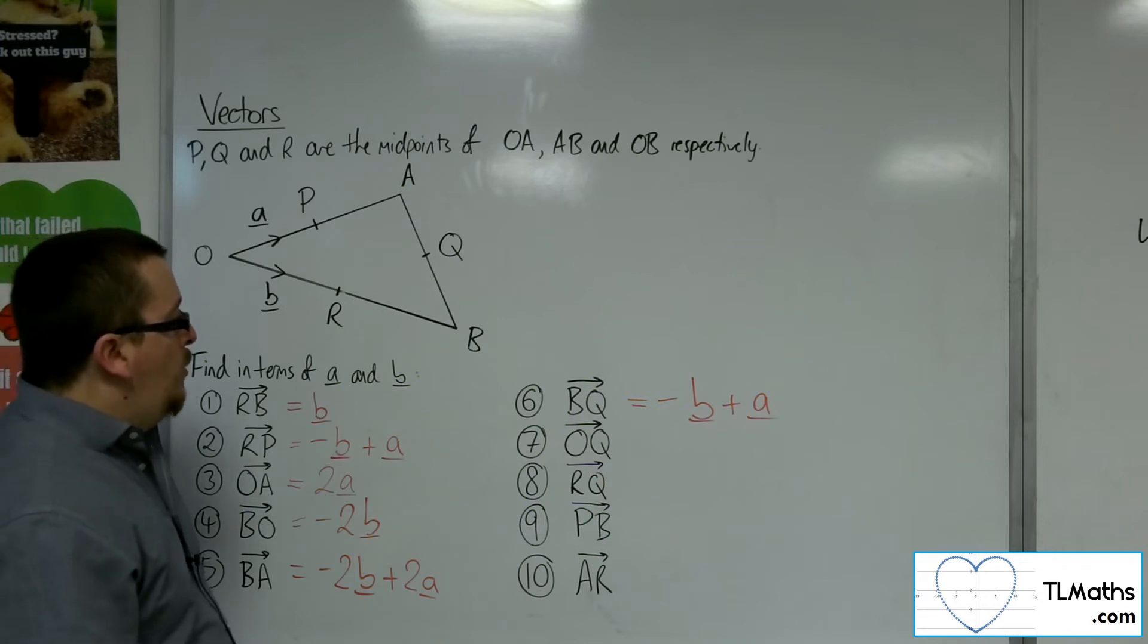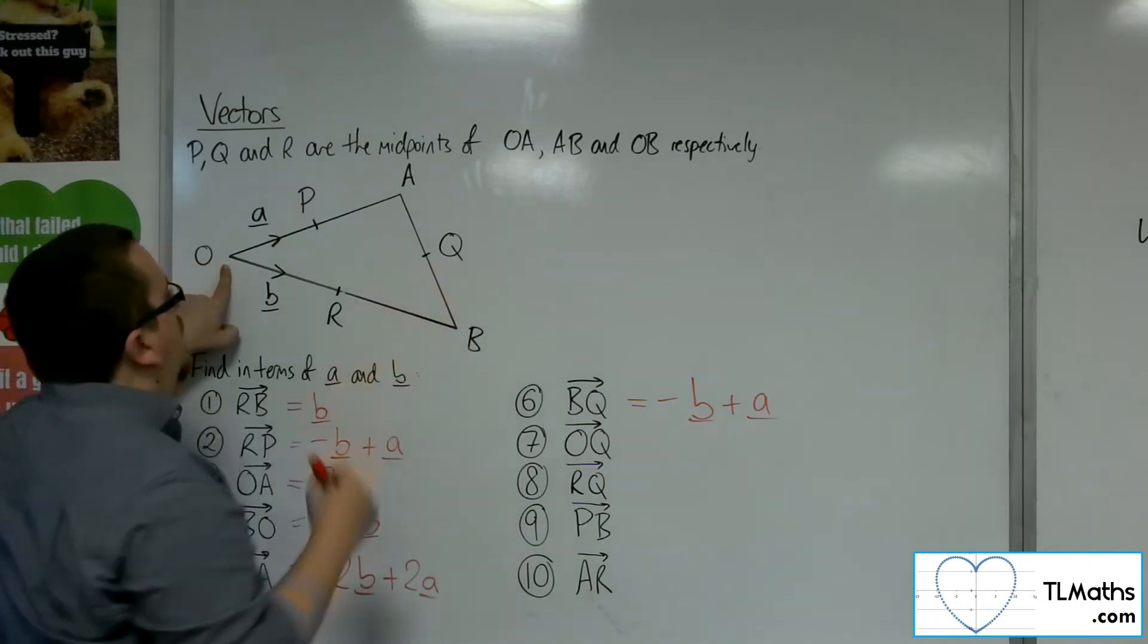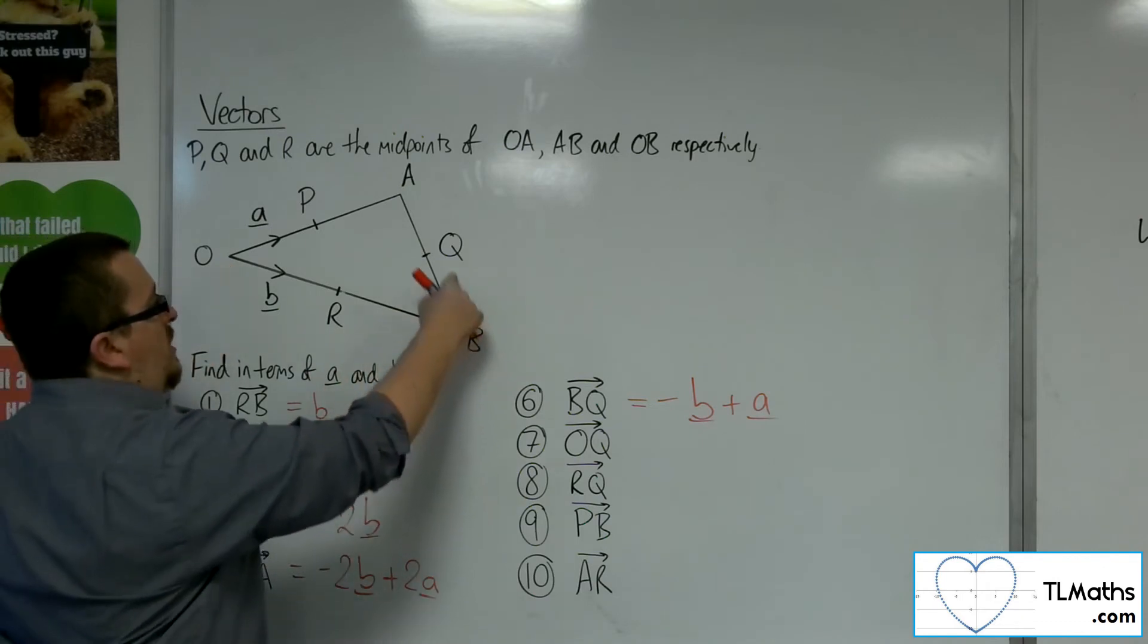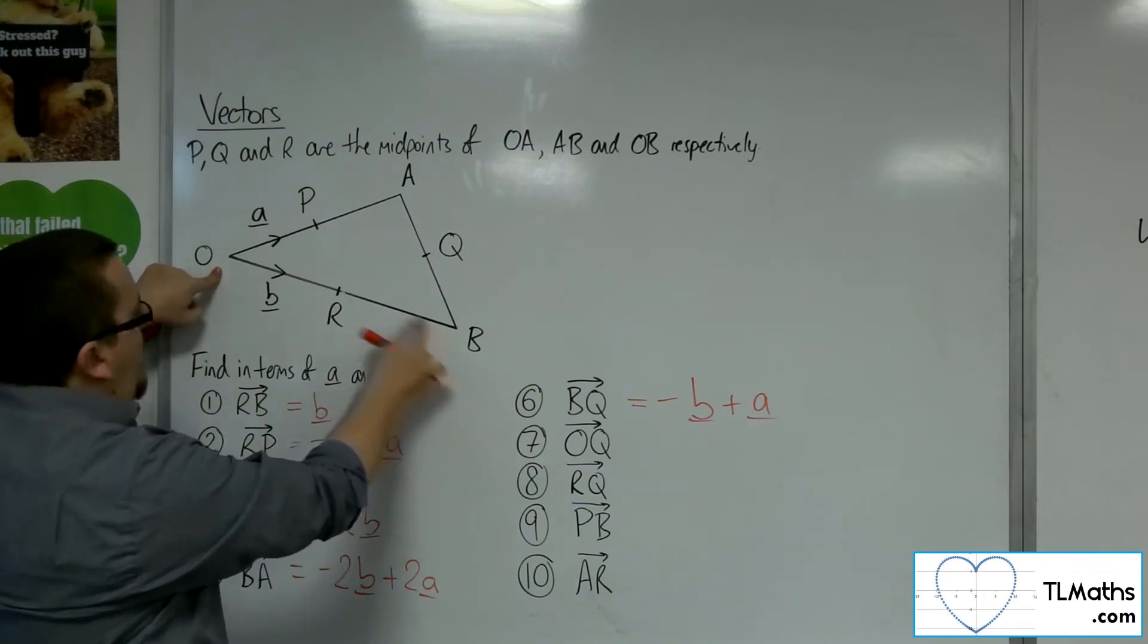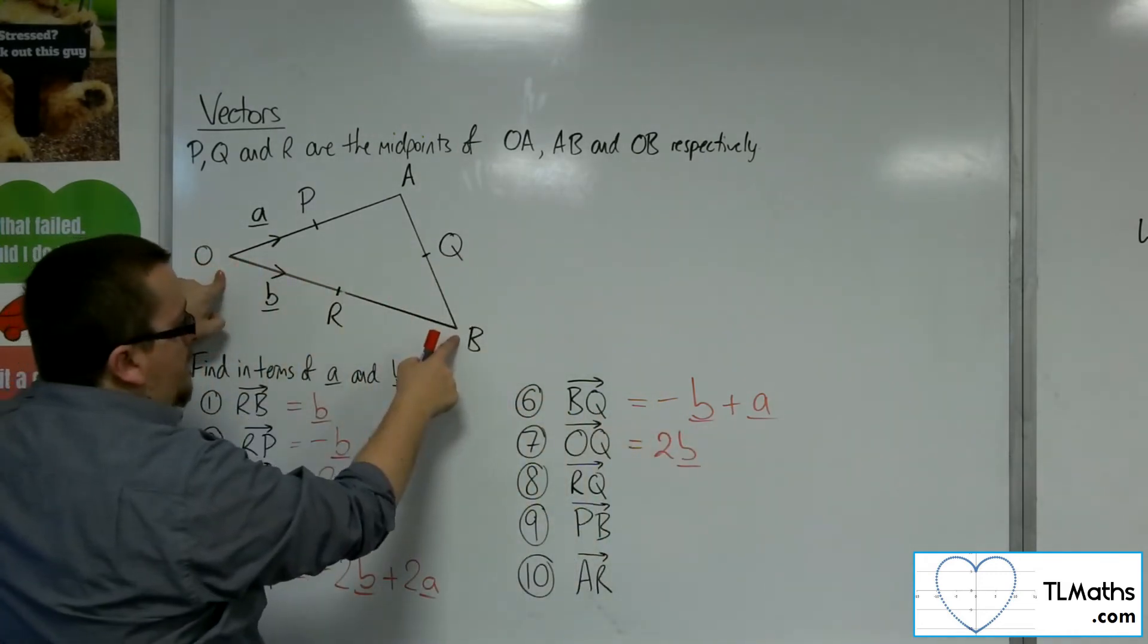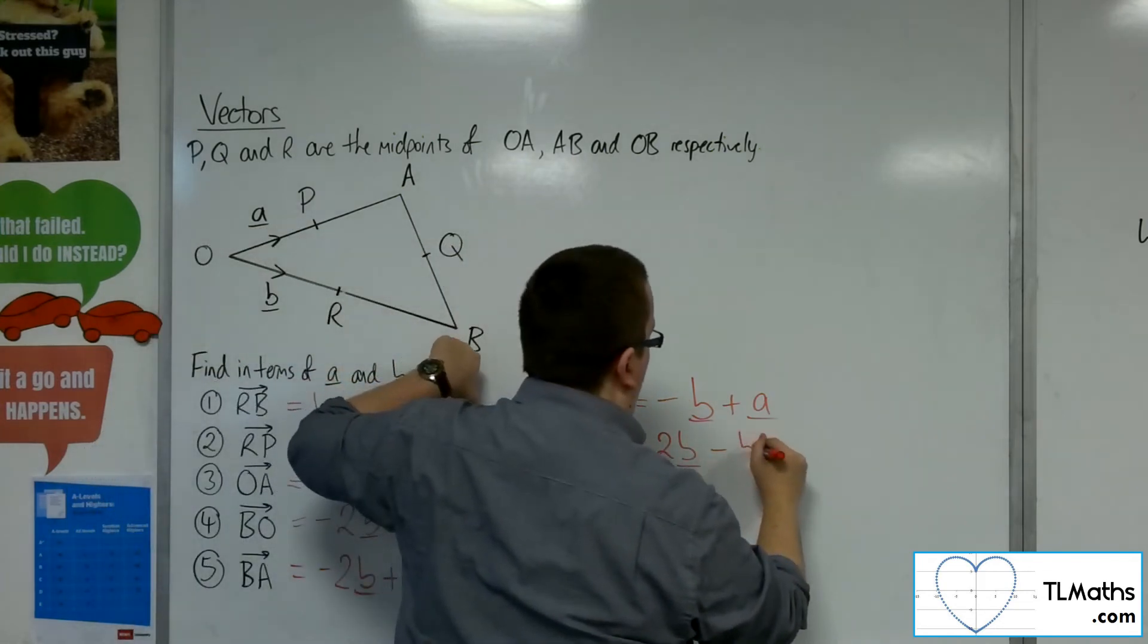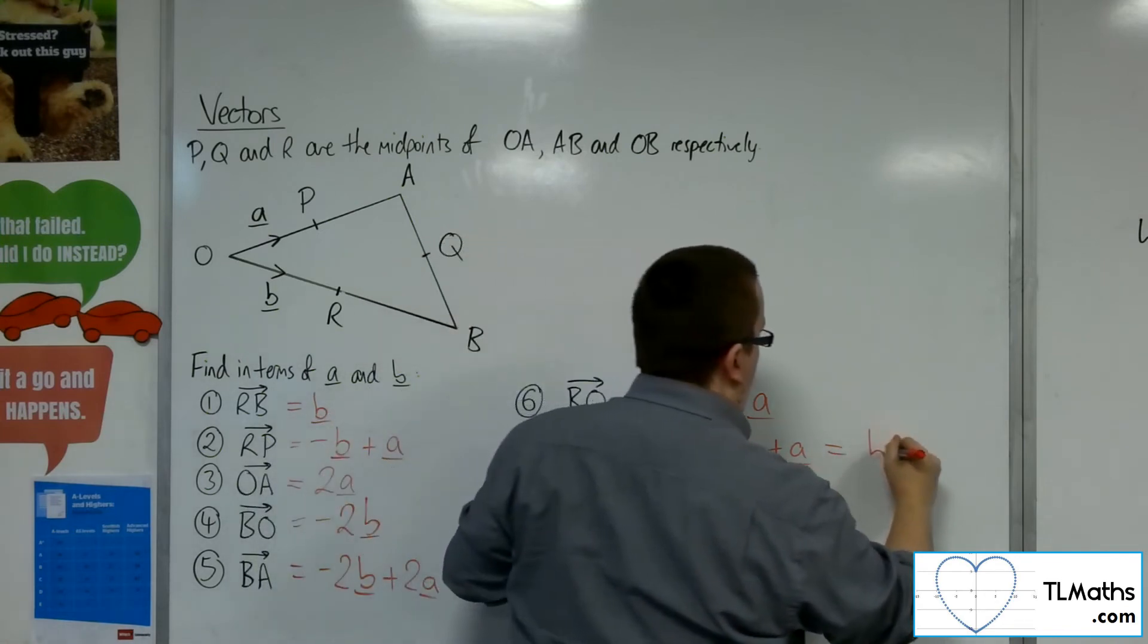Right. Now how about OQ? O to Q. Well, I know how to get from B to Q. I can find out how to get from O to B because that was 2B. So this would be 2B. That would get me from O to B. And then to get from B to Q, I've just worked that out. So I've got to take away B plus A. So in total, that would be B plus A.